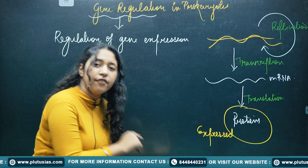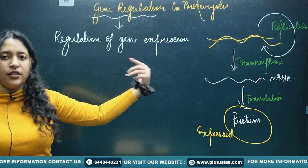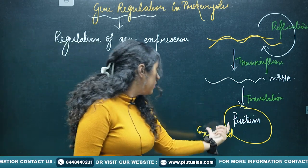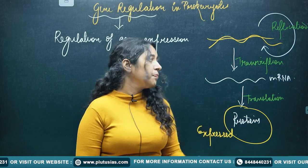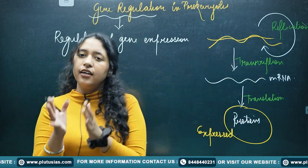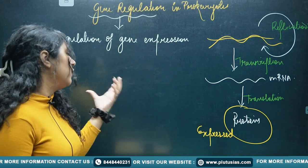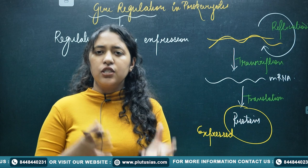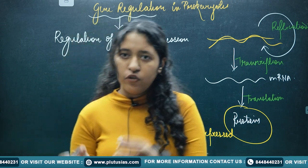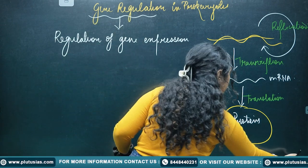So here we are talking about regulation of gene expression — that means at the protein level. Genes are expressed when they are at their protein level. So we are going to regulate these genes. Why regulate genes? Let us understand by looking at two types of genes.